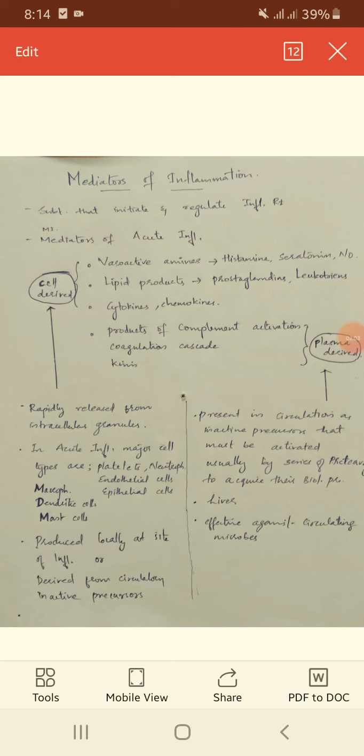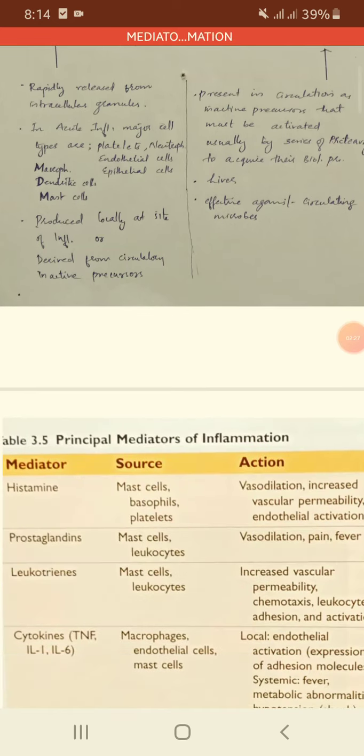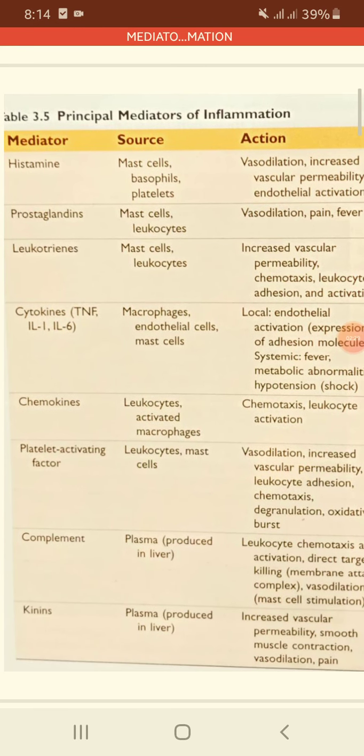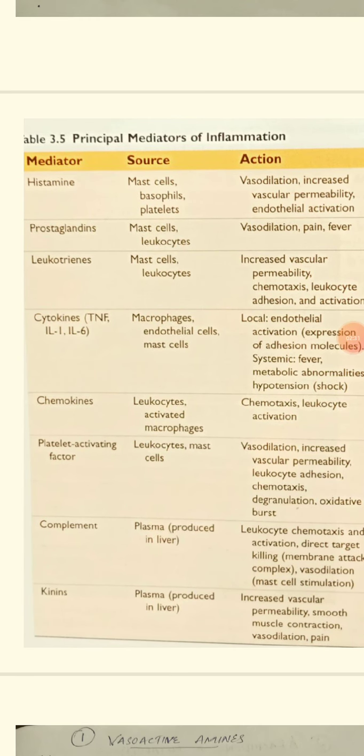Plasma-derived mediators exist as inactive precursors in the circulation. They are activated through a series of proteolytic cleavages against circulatory microbes. This is the principle of mediators of inflammation.